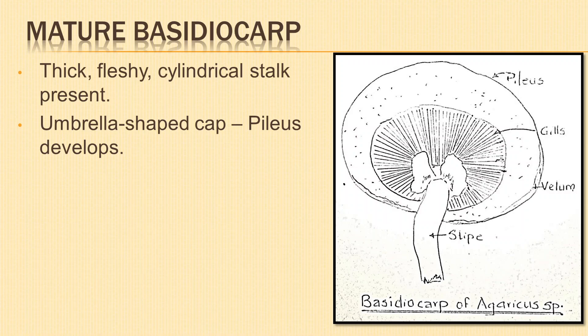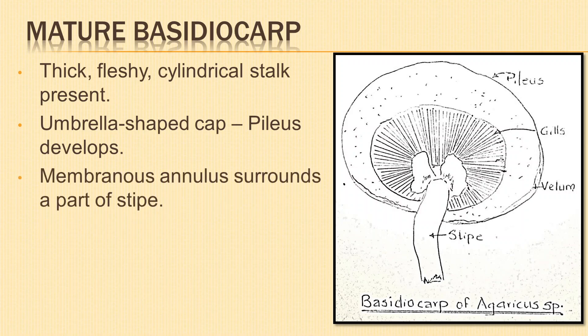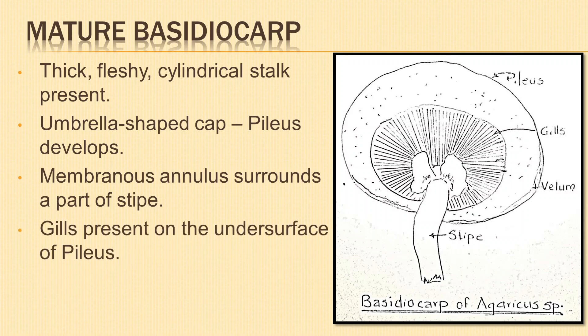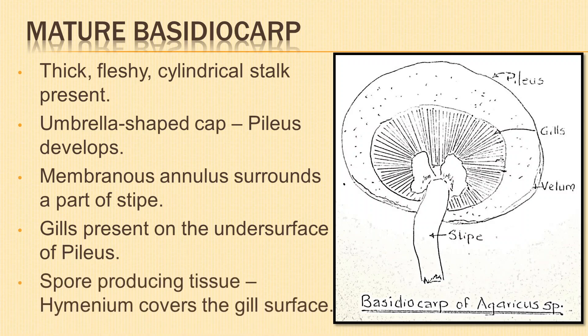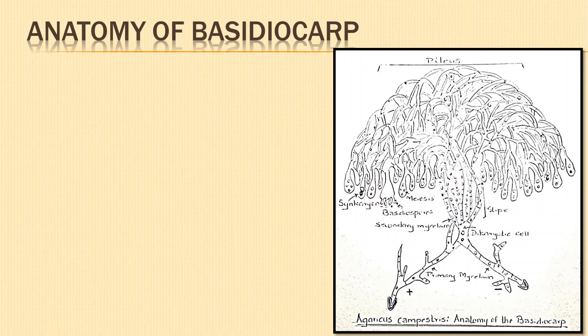The mature basidiocarp consists of a thick fleshy cylindrical stalk called the stipe. On top of the stipe a broad umbrella-shaped structure known as the pileus develops. A membranous ring called the annulus surrounds part of the stipe. A number of plates of tissues called gills or lamellae hang from the under surface of the pileus, radiating from the margin towards the stipe. There is a fertile layer of spore-producing tissue called hymenium or thecium covering the surface of the gill from both sides.